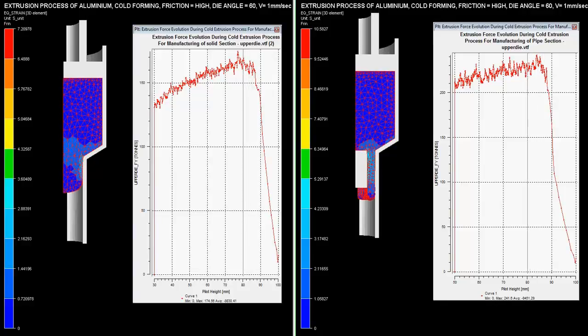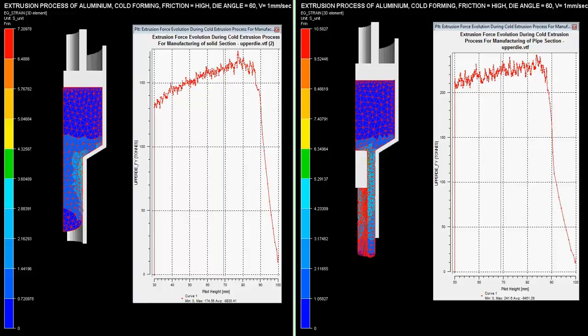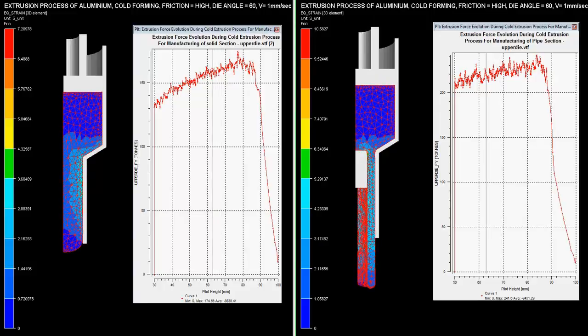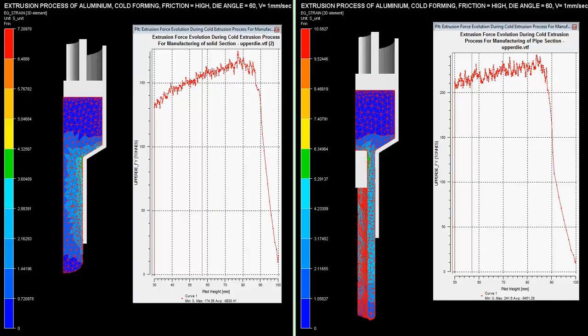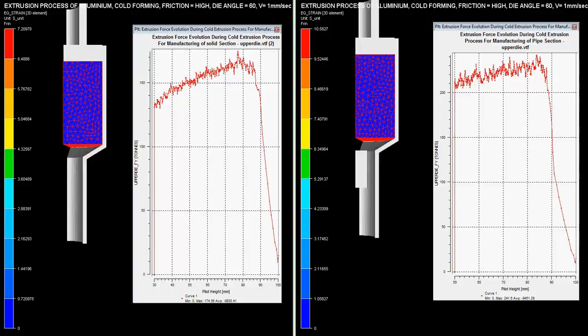In this video you can comparatively see the extrusion process of aluminum pipe and solid pipe. In the right half of the video, pipe extrusion process is shown which comprises of a mandrel in the extrusion die.